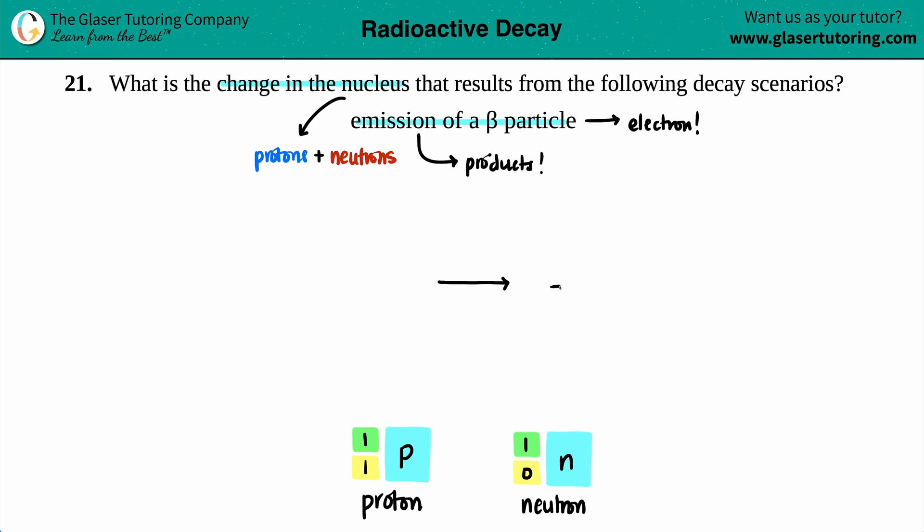All right. Well, we either say E for electron, because that's just what a beta particle is. It's just an electron. Or you can say beta. Let's just maybe throw in a B, B for beta. And just know that there's two numbers always when you're doing nuclei notation, one on top and one on the bottom. So we should know what our electron or beta numbers are.